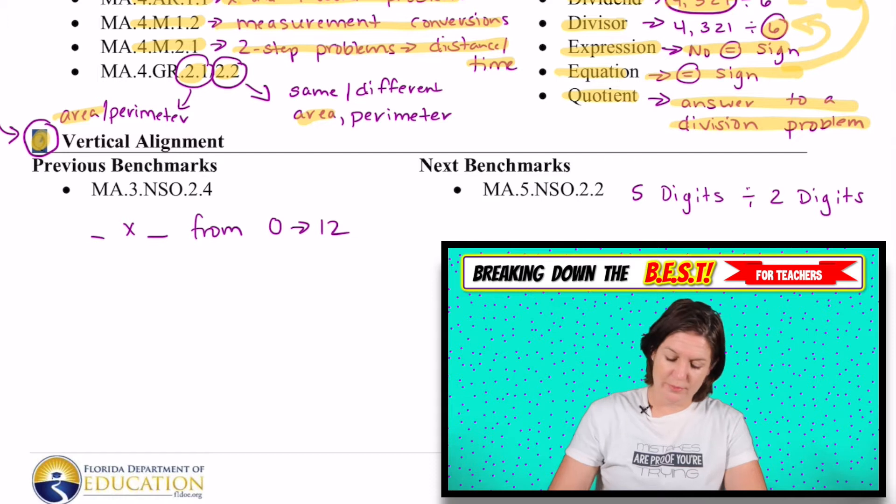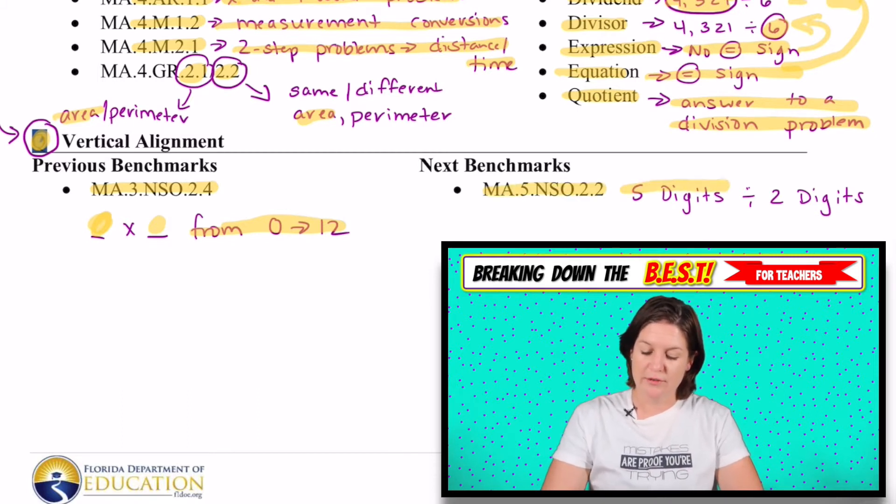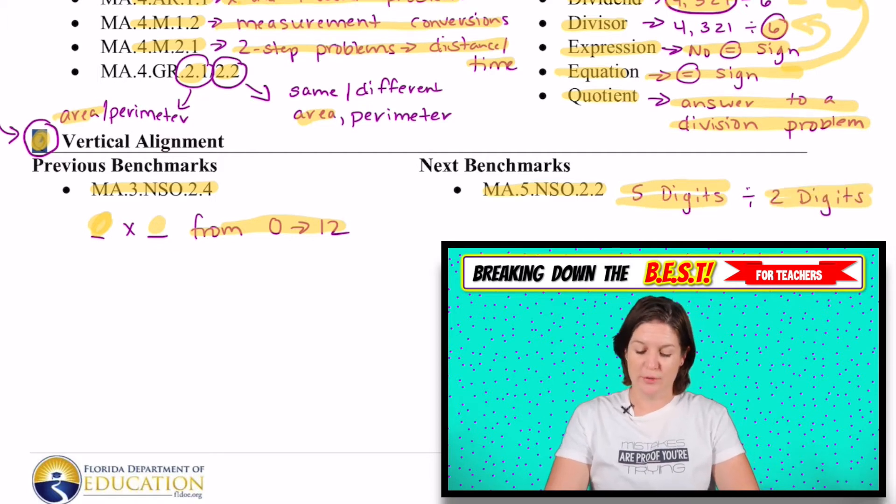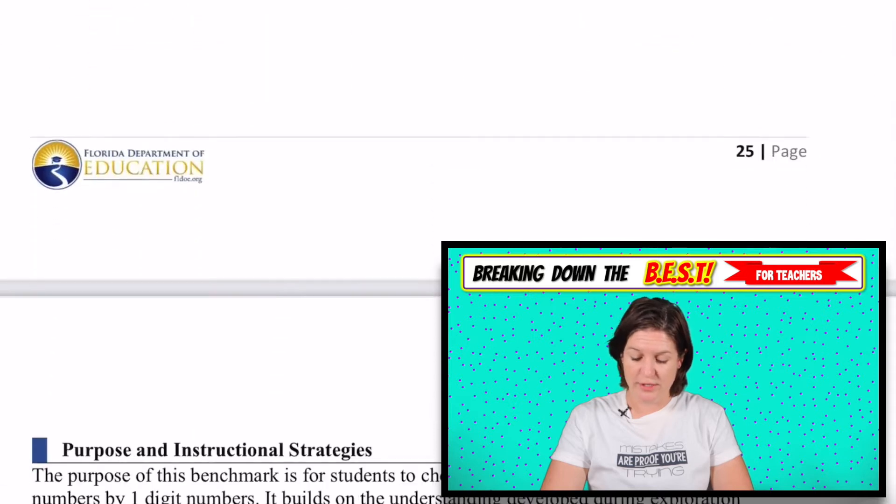Where are they coming from? They're coming from a bunch of different multiplication and division standards in third grade. The Department of Education labeled this one where we're multiplying two factors that have a factor from zero to 12. And where are they going? In fifth grade, they will be dividing up to five digits by up to two digit numbers. So we're increasing that divisor to two digits and increasing the dividend to five digits.